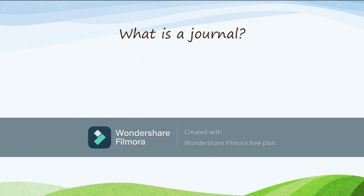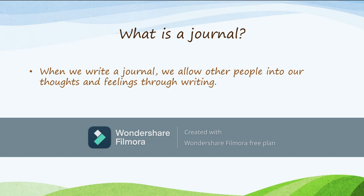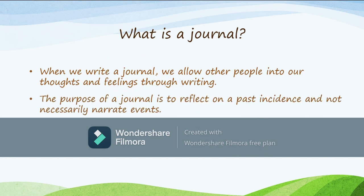So, what's a journal? When we write a journal, what we do is we allow other people into our thoughts and feelings through writing. The purpose of a journal is to reflect on a past incident and not necessarily to narrate events. That is very important, because some of us, when you're writing a journal, you tend to think it's a narrative. But it's not a narrative — it's more of a reflection on a past incident.